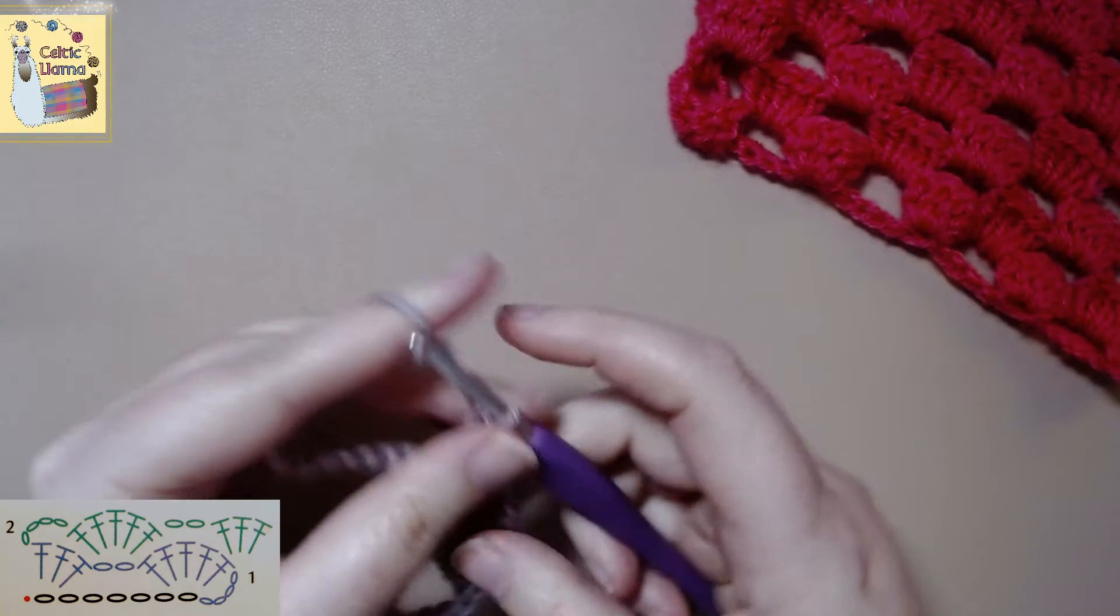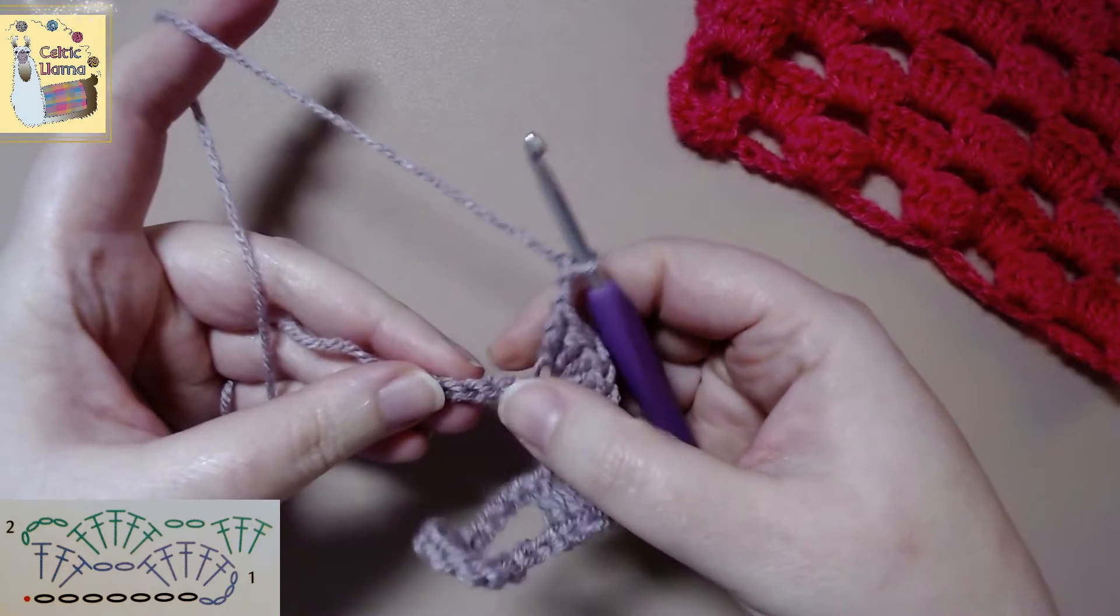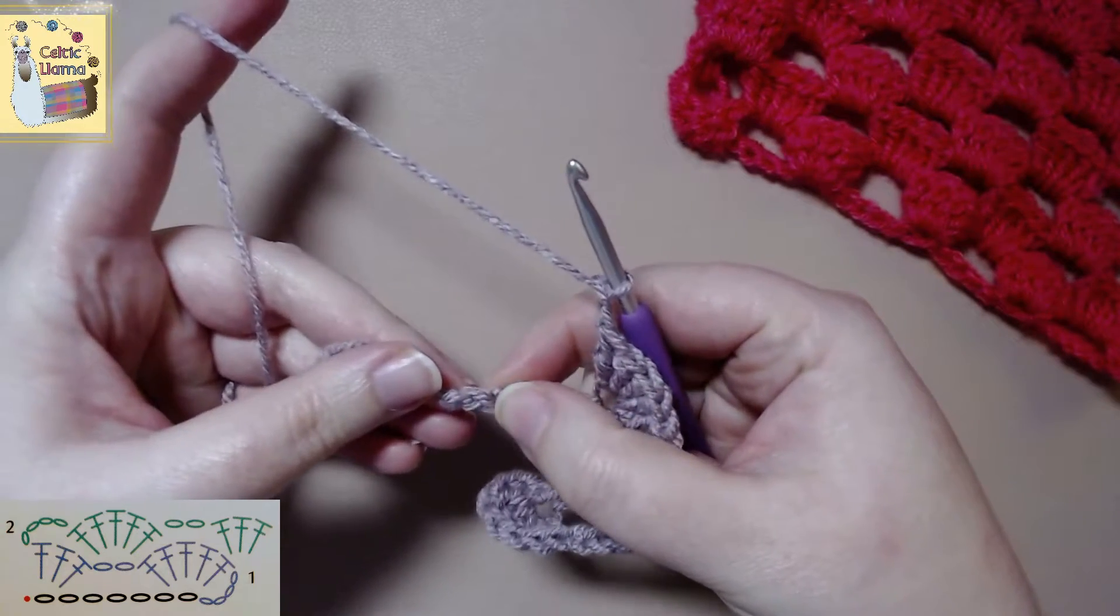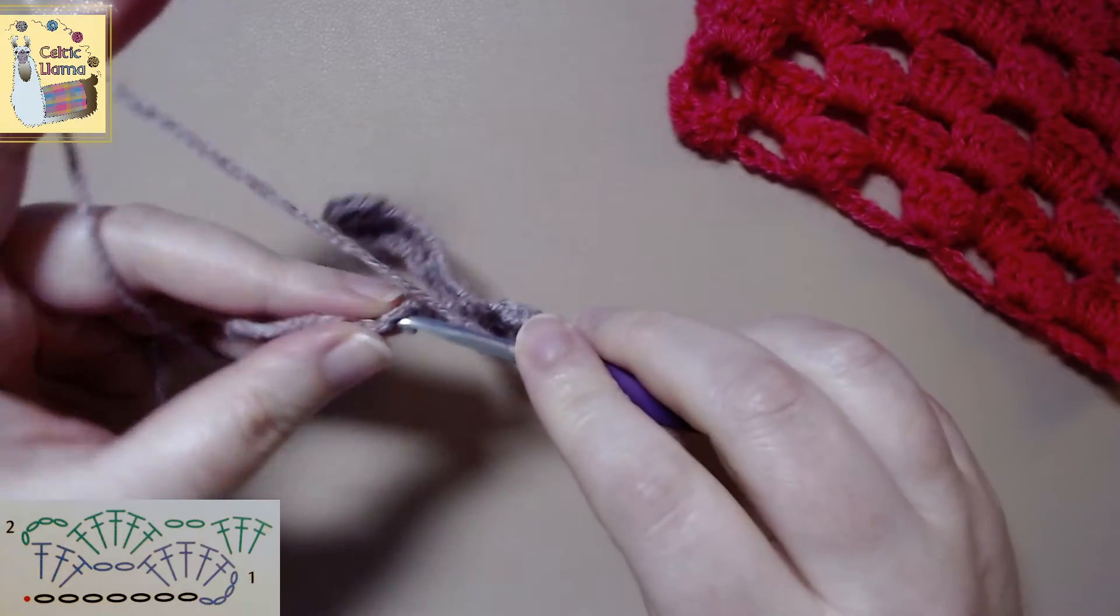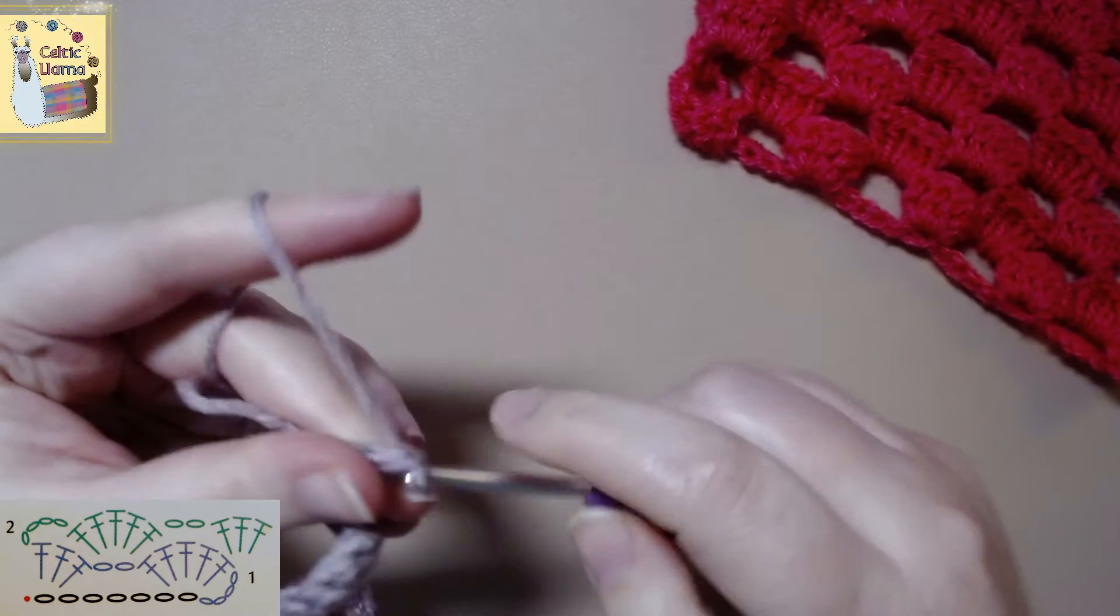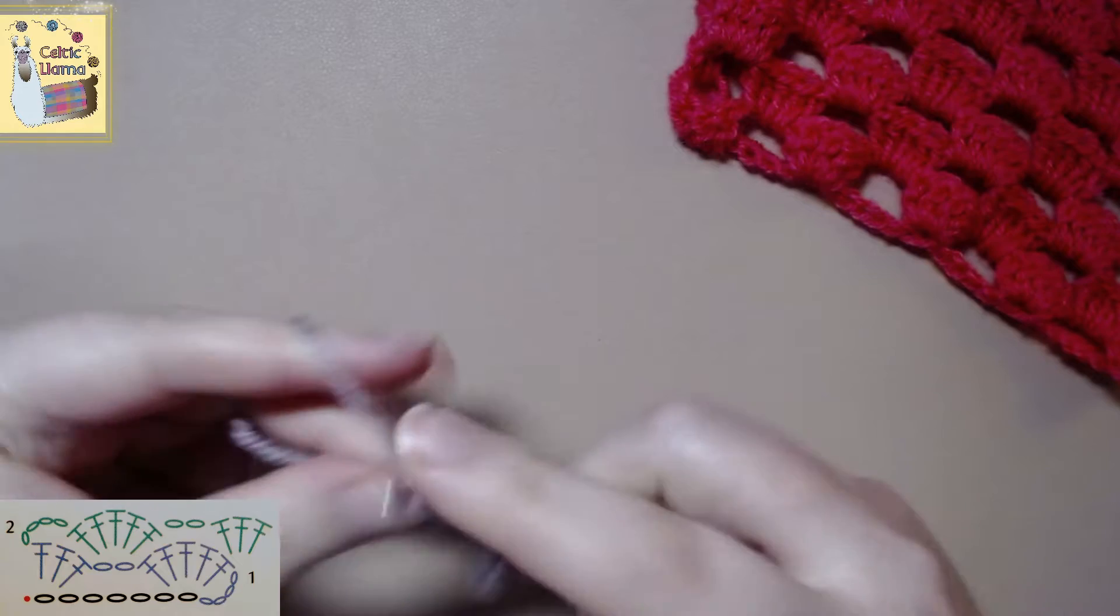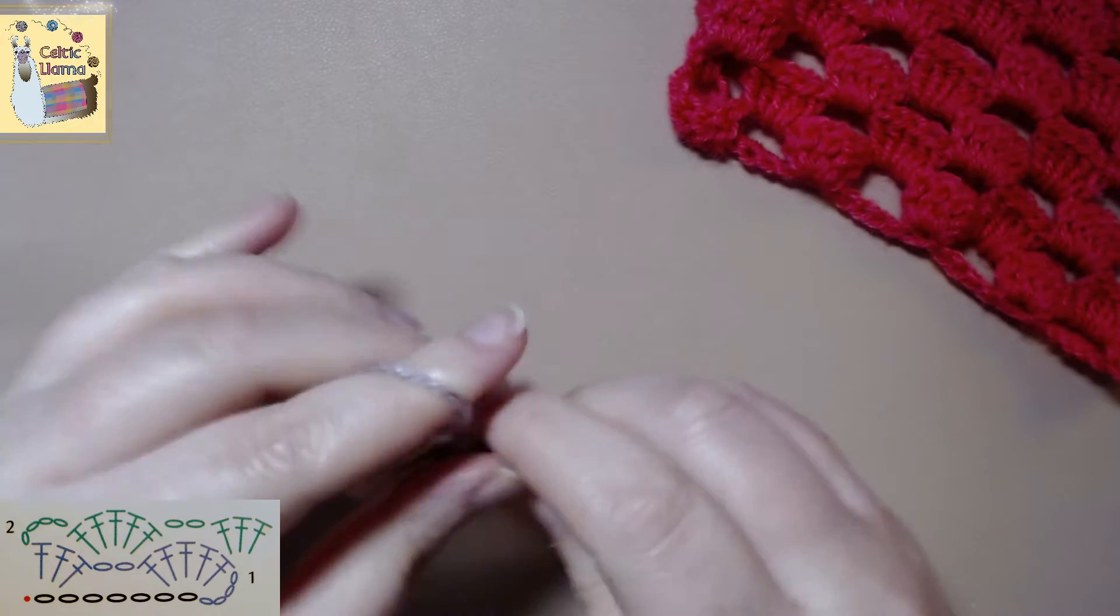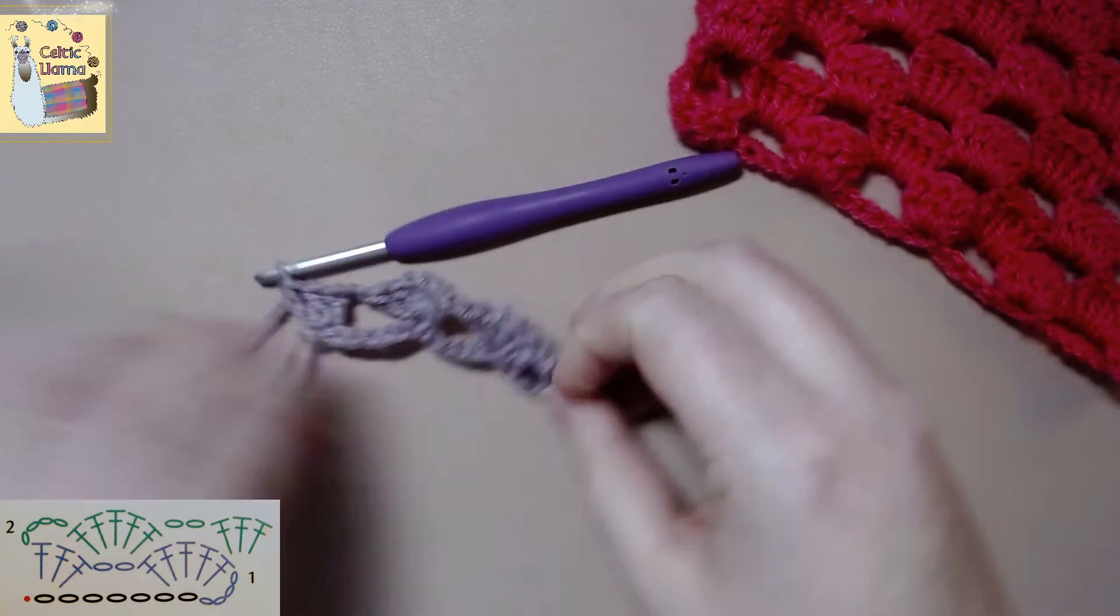So we're going to chain two, skip five, and that'll bring us to the last stitch in the chain. For this one we're going to work three double crochets. That finishes row one.